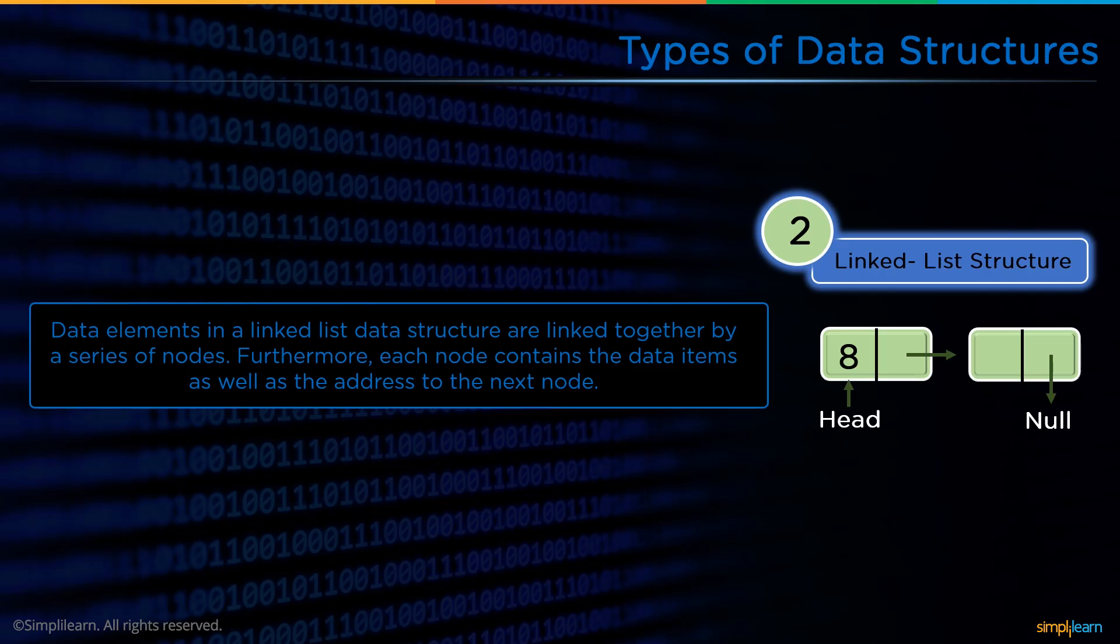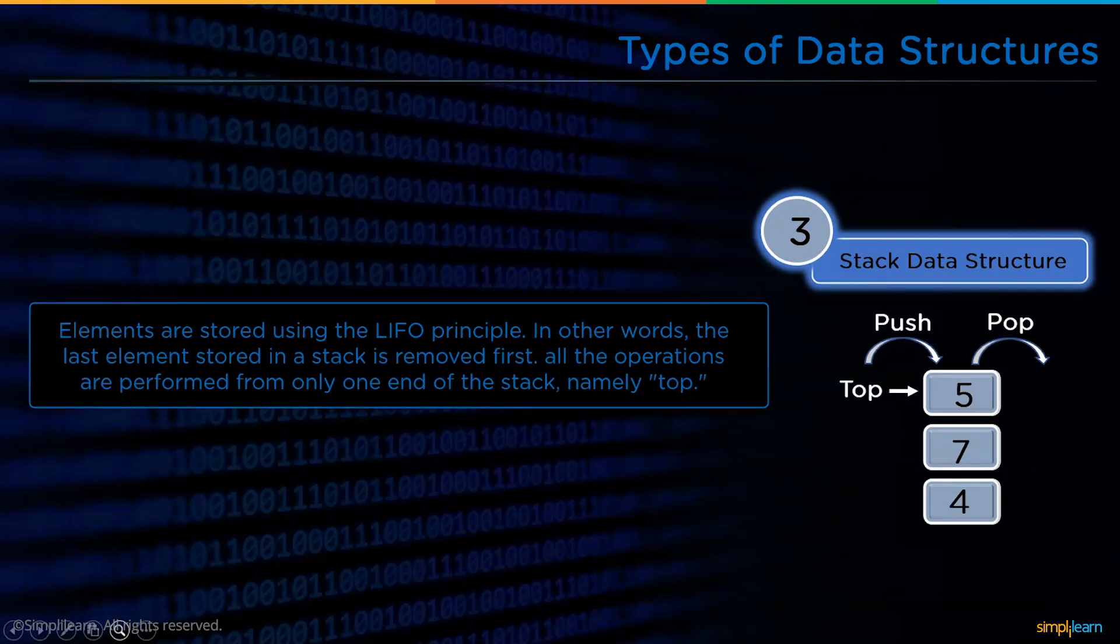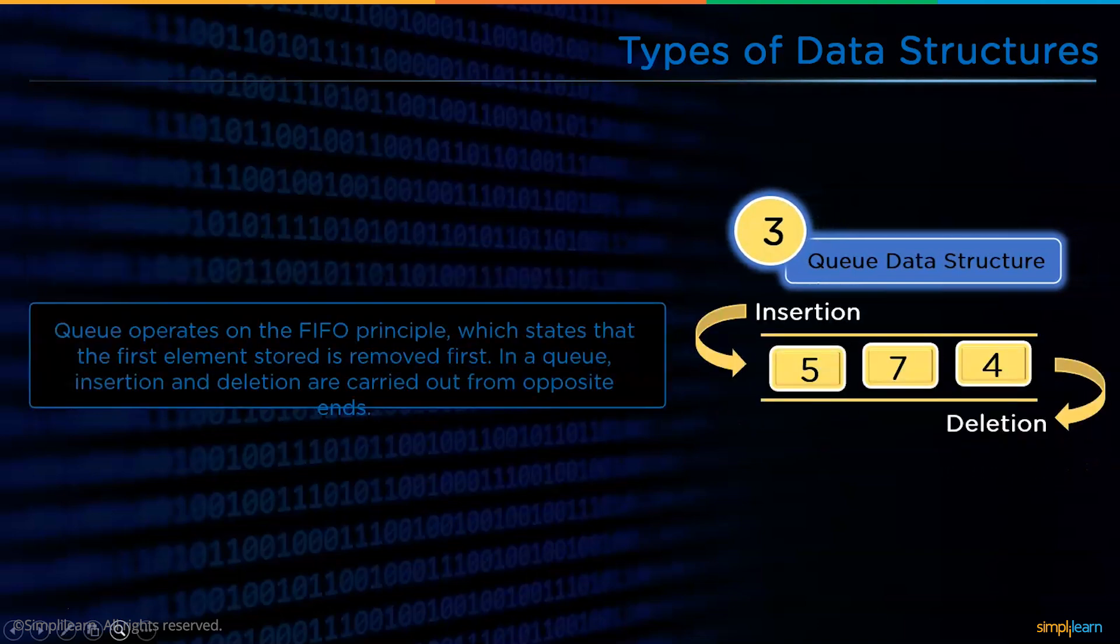Each node contains the data items as well as the address to the next node. The third data structure is the stack. Elements in a stack data structure are stored using LIFO principle. In other words, the last element stored in the stack is removed first. In stack, operations can only be performed at one end, namely the top. The last data structure is the queue. Unlike stack, queue data structure operates on the FIFO principle, which states that the first element stored in the queue is removed first.